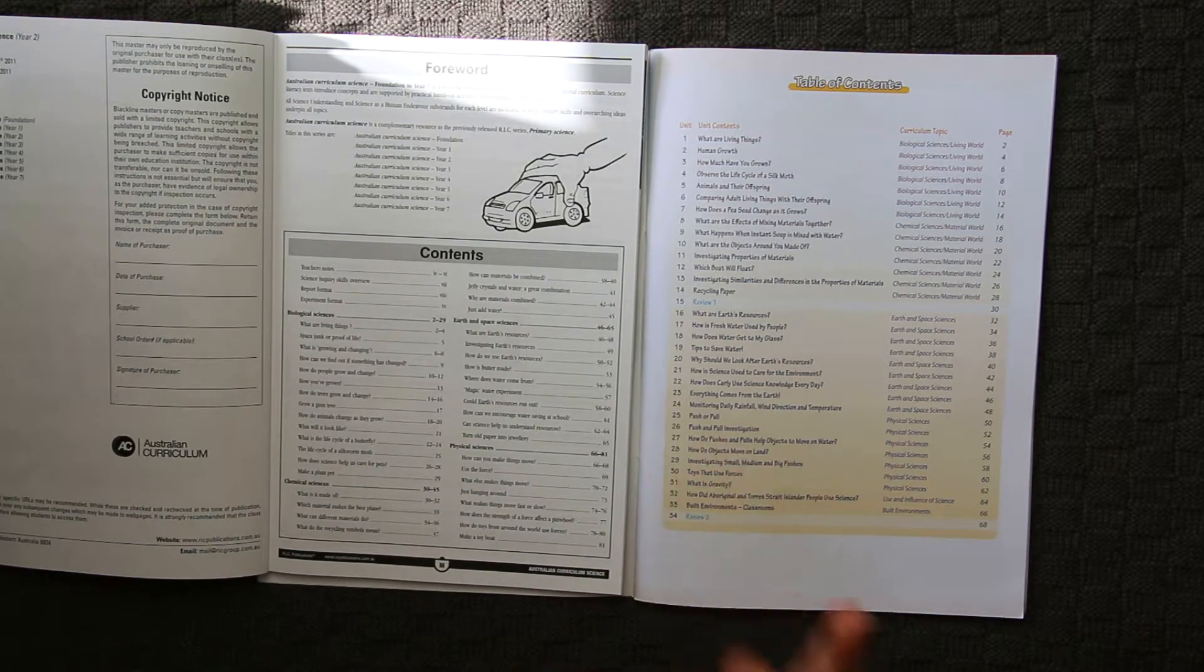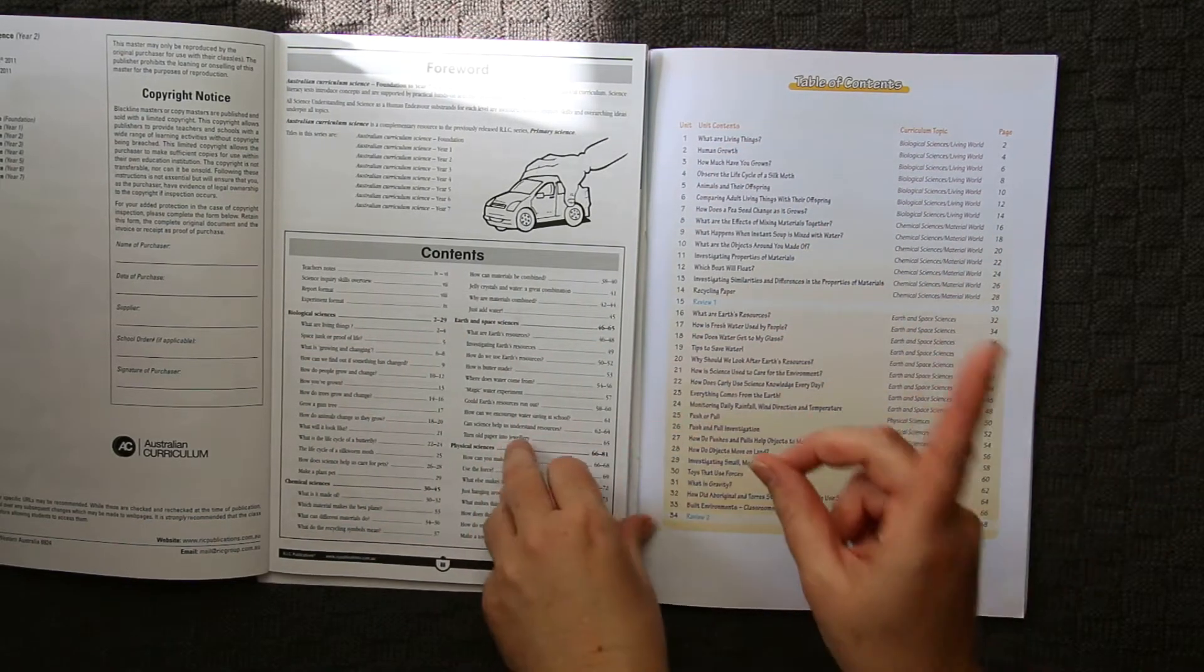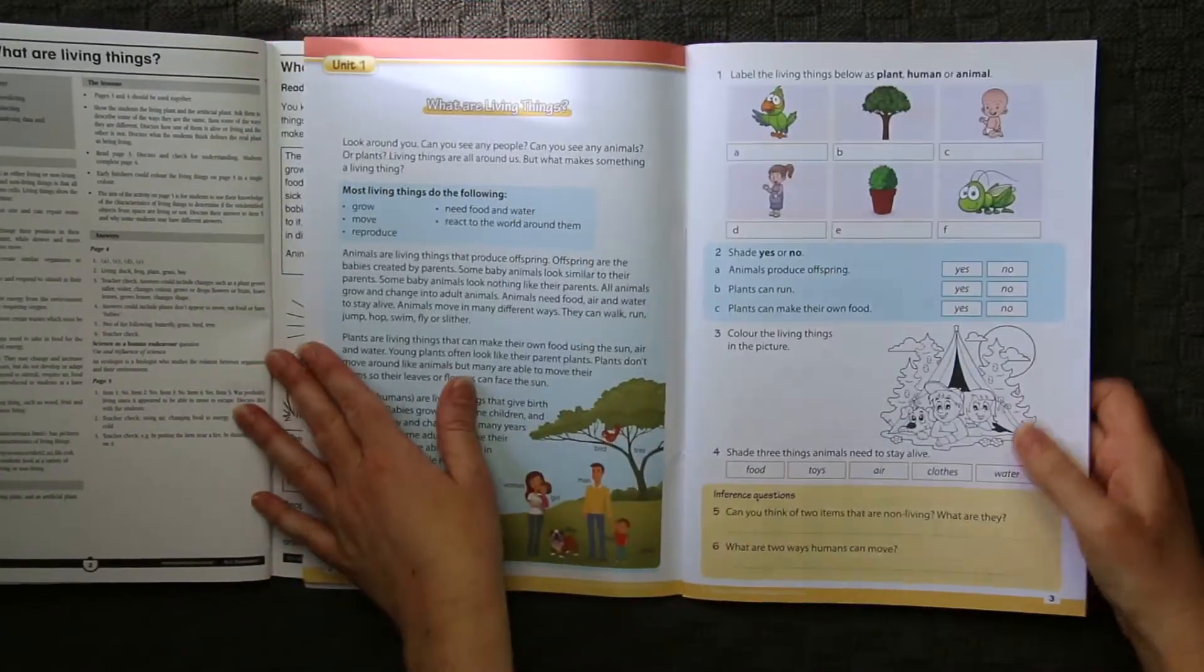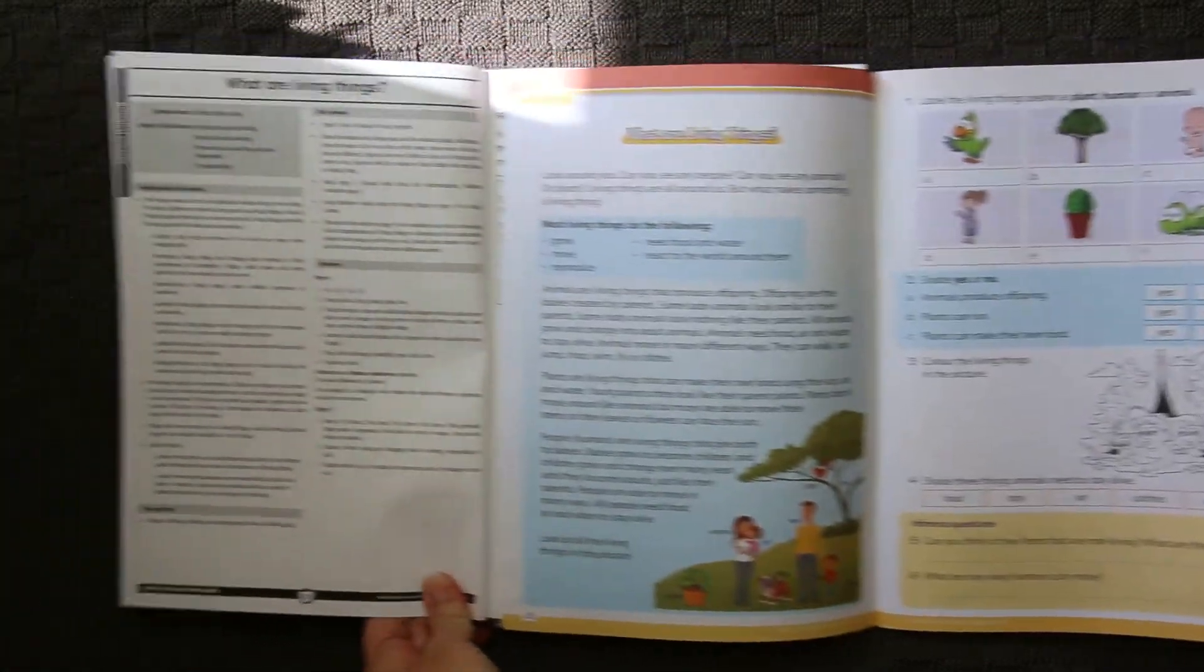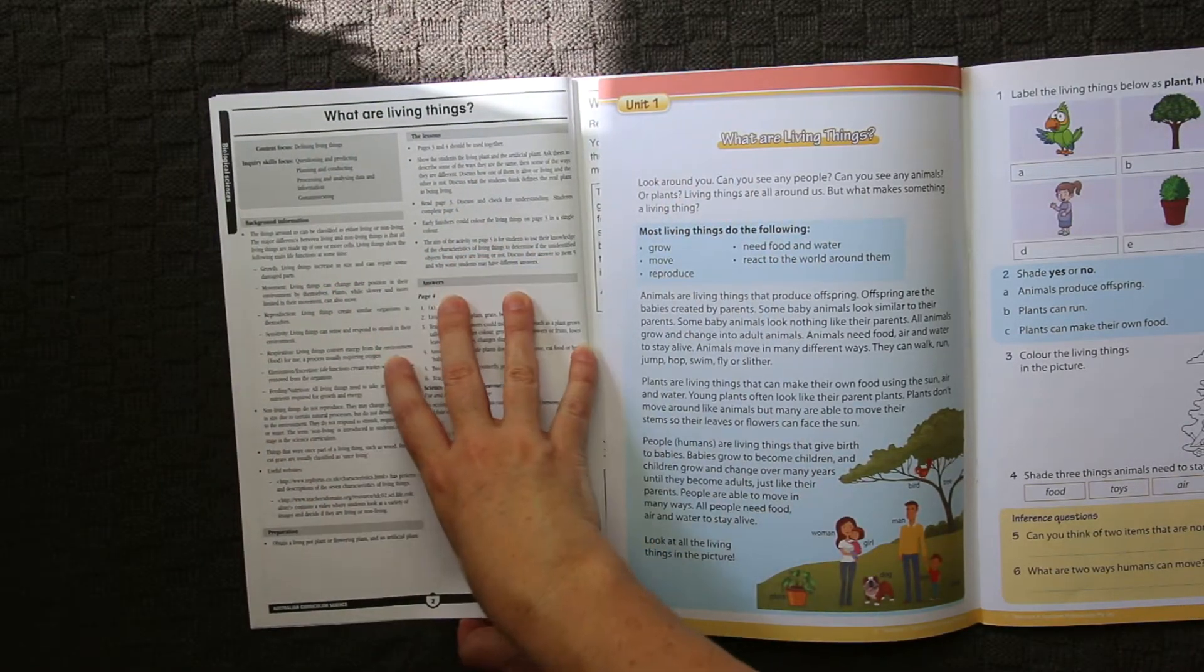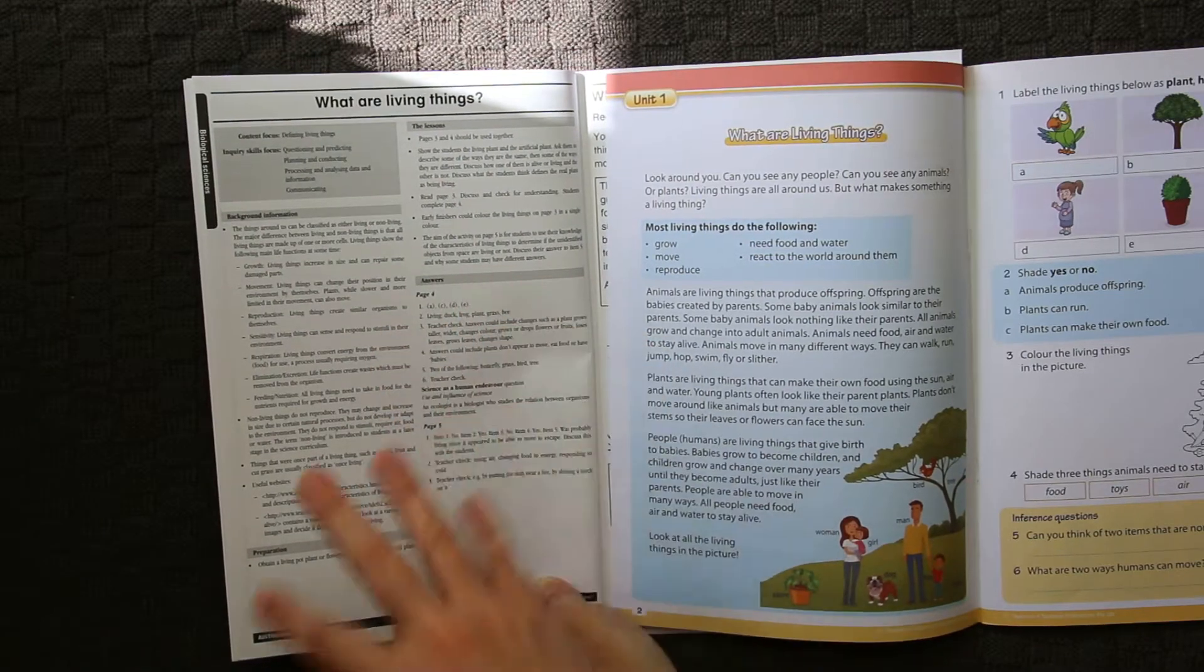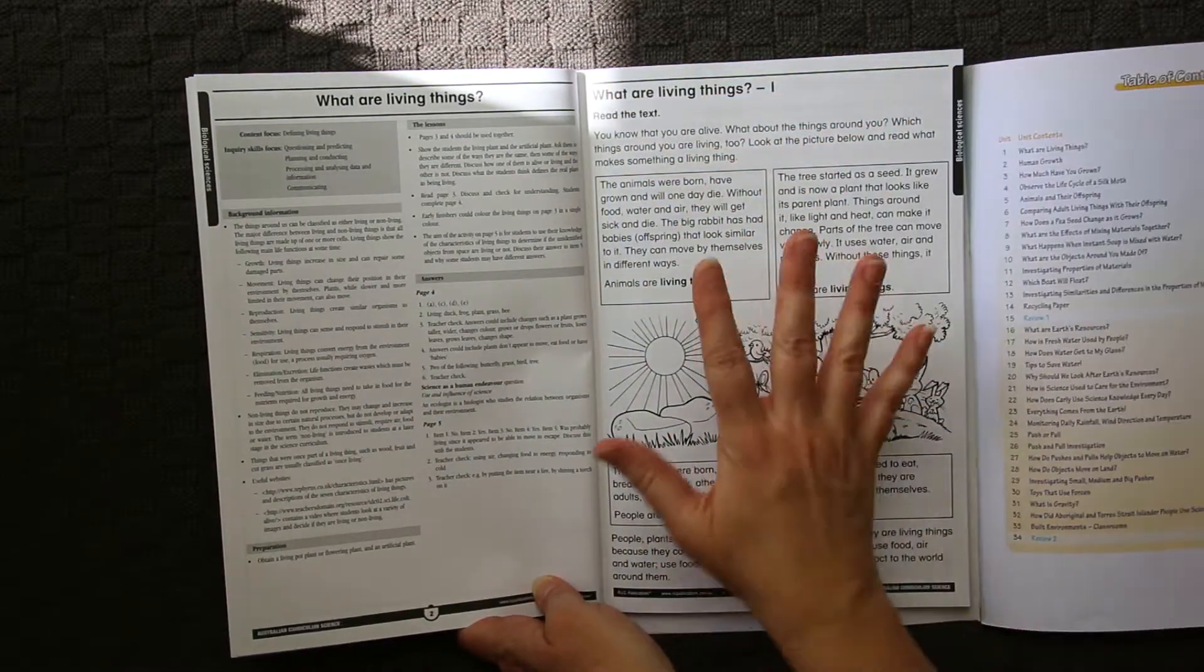The very first lesson: what are living things? Let's take a look at that lesson in both of the books so that we can see the differences and the similarities between those lessons. First thing that stands out to me is that the RIC workbook has a teacher preparation page. This particular page explains everything that's going on, gives you background information and all the answers, and it will also tell you any hands-on or additional activities that might go along with this particular lesson.